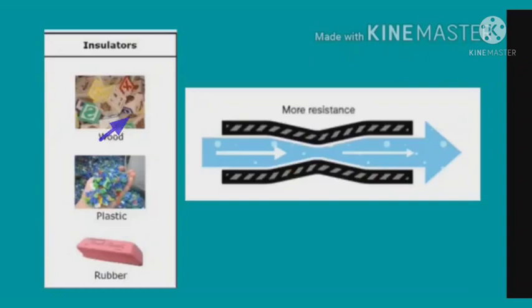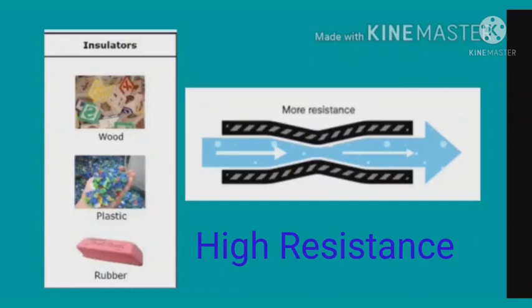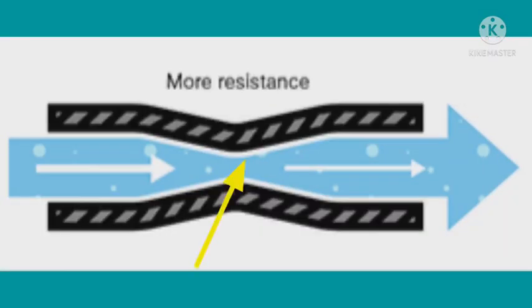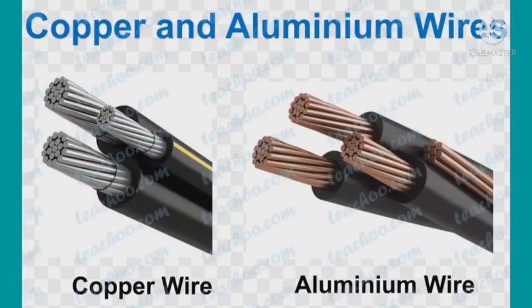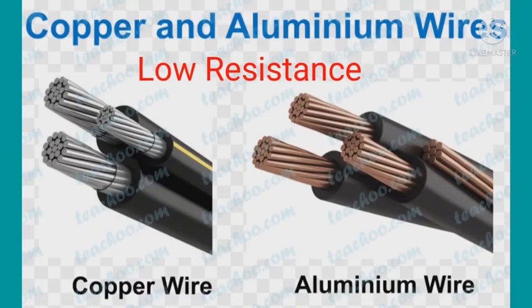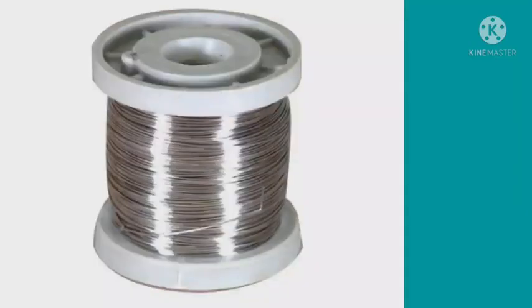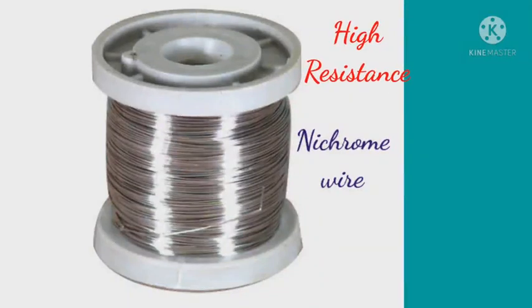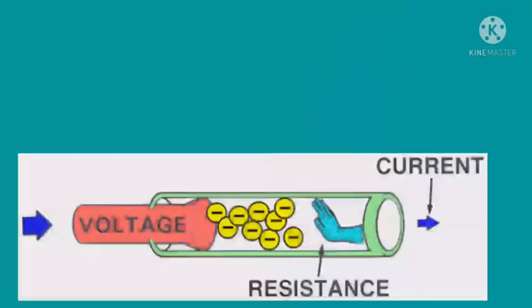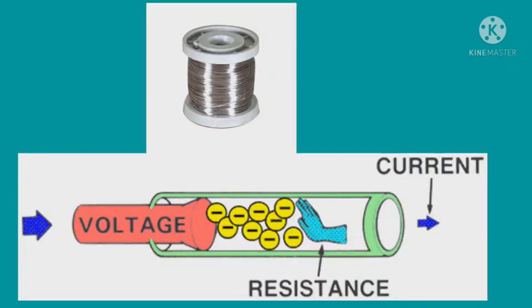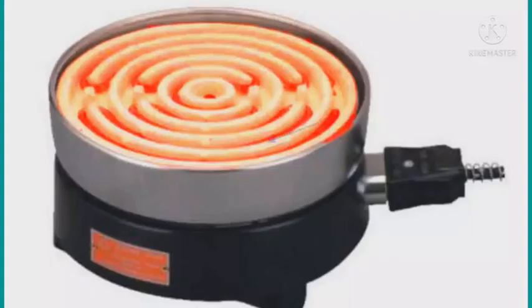But materials like wood, plastic, and rubber have very high resistance, meaning electricity cannot flow through them easily. Metals like copper and aluminium have very low resistance, whereas alloys like nichrome have very high electrical resistance, meaning it prevents the flow of electric current and becomes very hot.